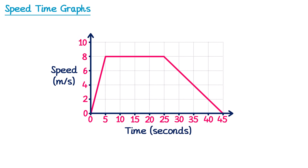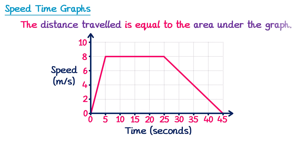A second thing we can calculate from a speed-time graph is the distance travelled. The distance travelled is equal to the area underneath the graph. So if we worked out this area, we would know how long the race was. We can split this shape into triangles and a rectangle, or since it's also a trapezium, we can use the trapezium area formula.